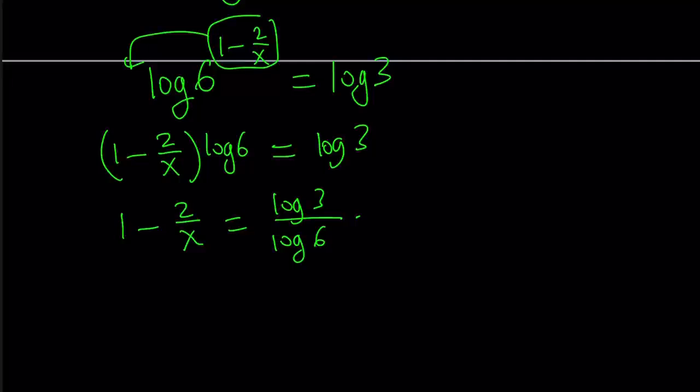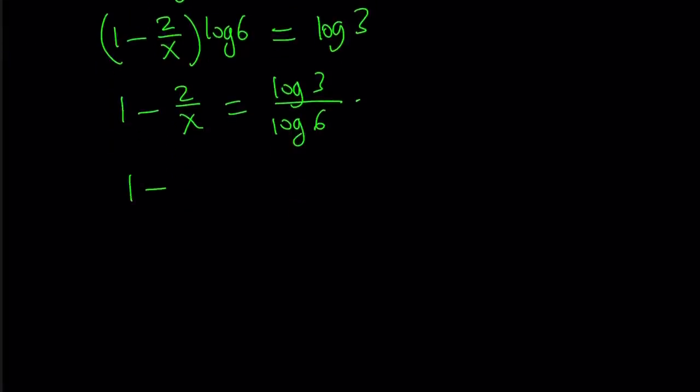So here's what we can do. First of all, we can go ahead and switch the 2 over x and log 3 over log 6. So I can write it like this. 1 minus log 3 over log 6 equals 2 over x.